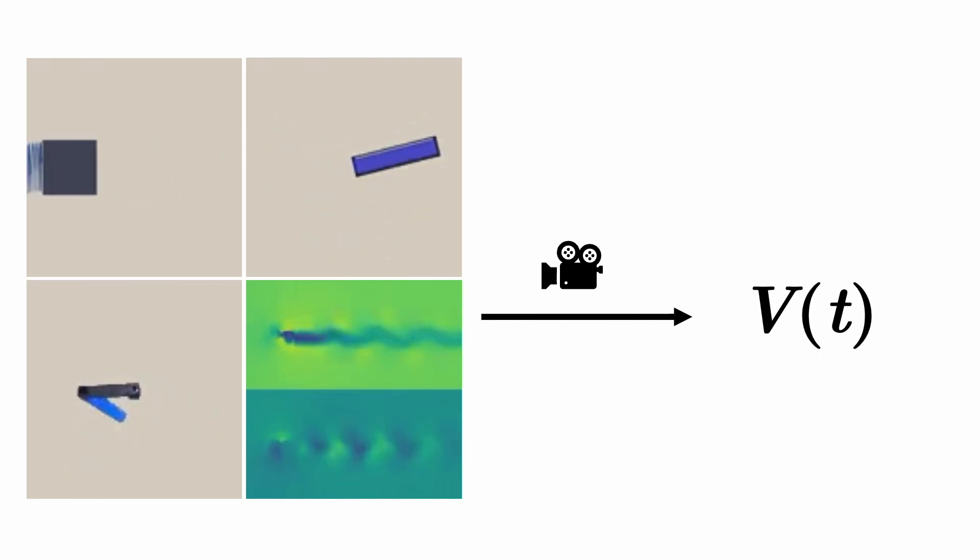In this work, we aim to automatically discover hidden variables from videos that can seamlessly integrate into the traditional scientific discovery paradigms. To achieve this, the discovered variables must satisfy two fundamental properties, similar to those defined by human scientists.